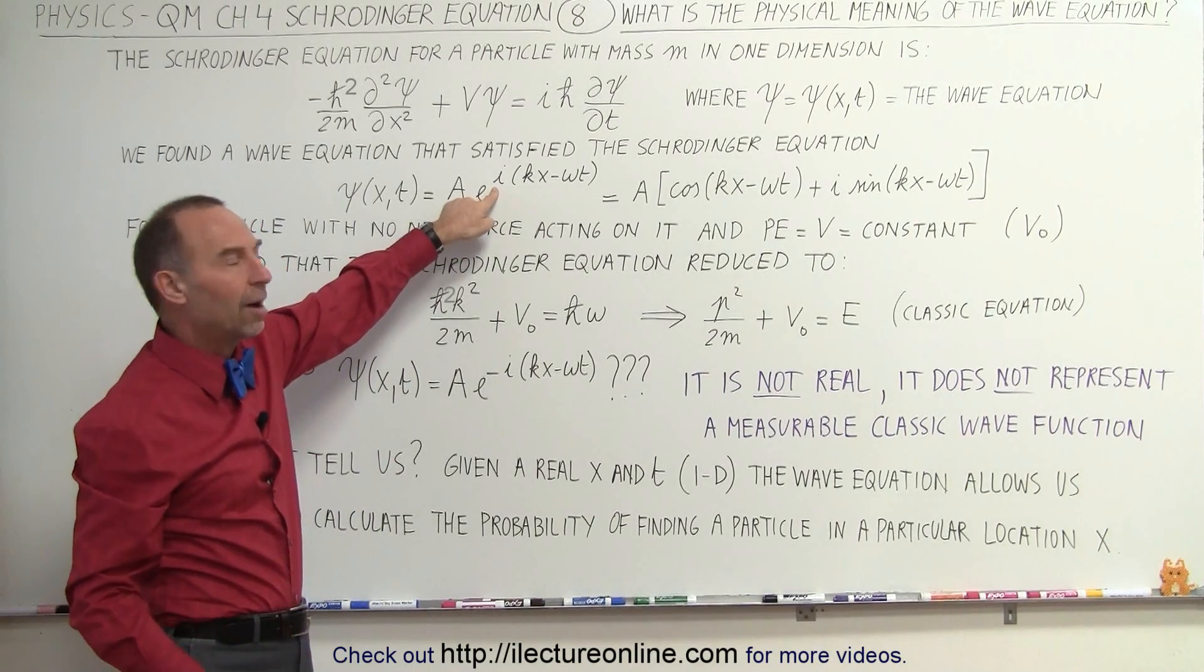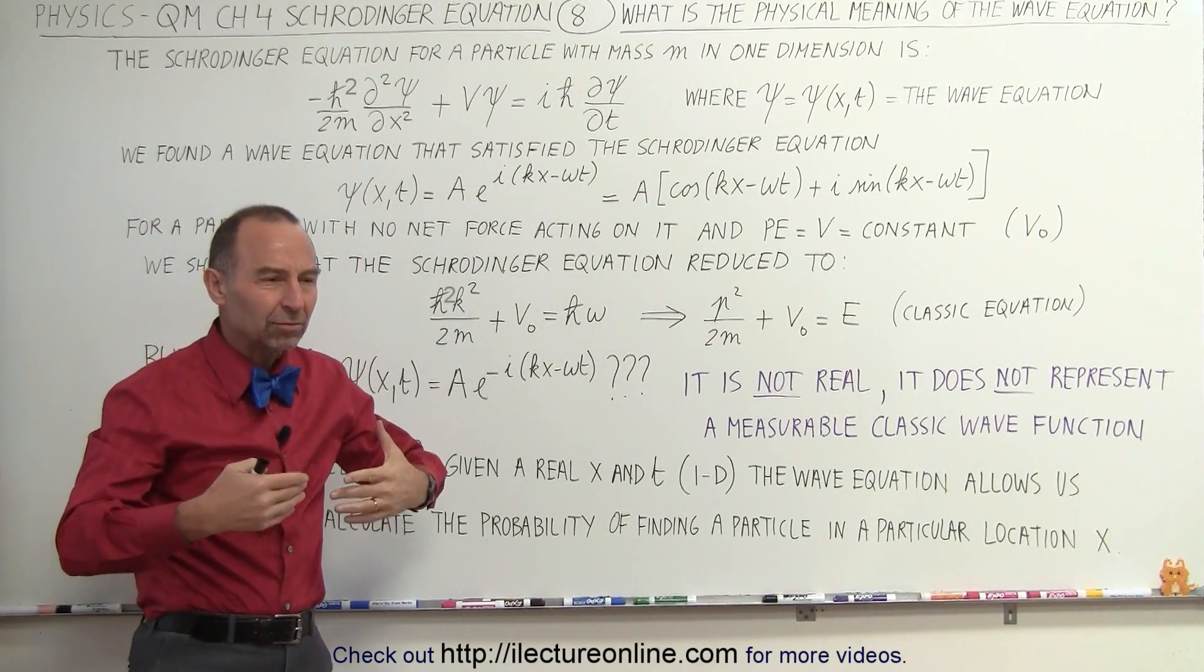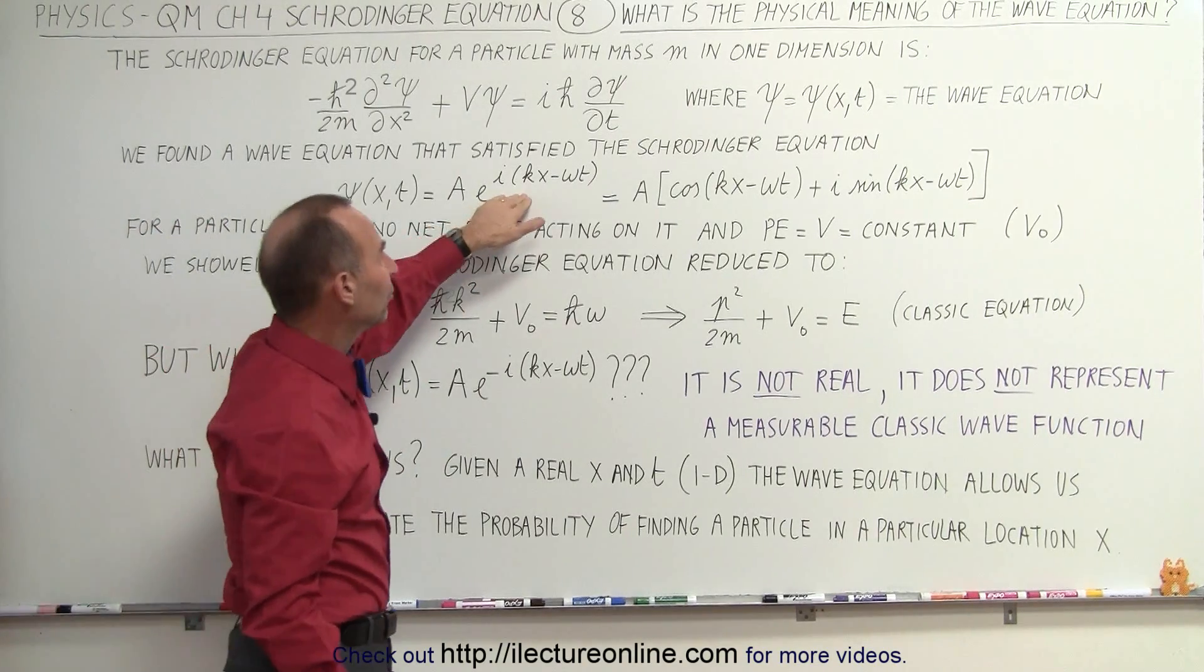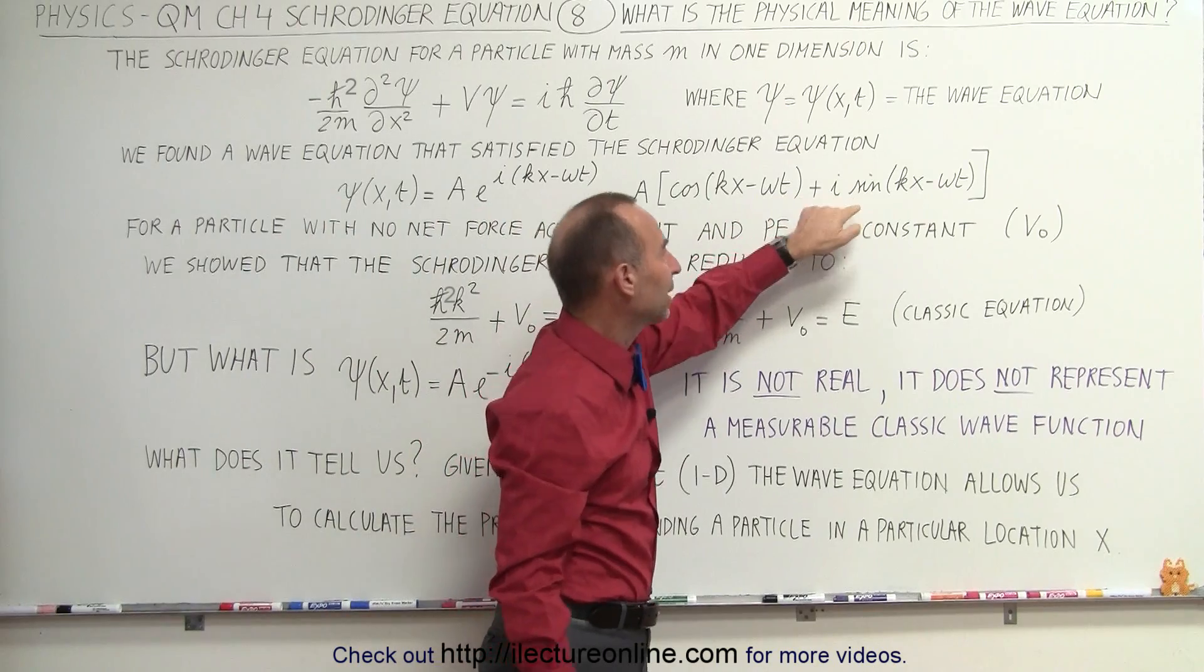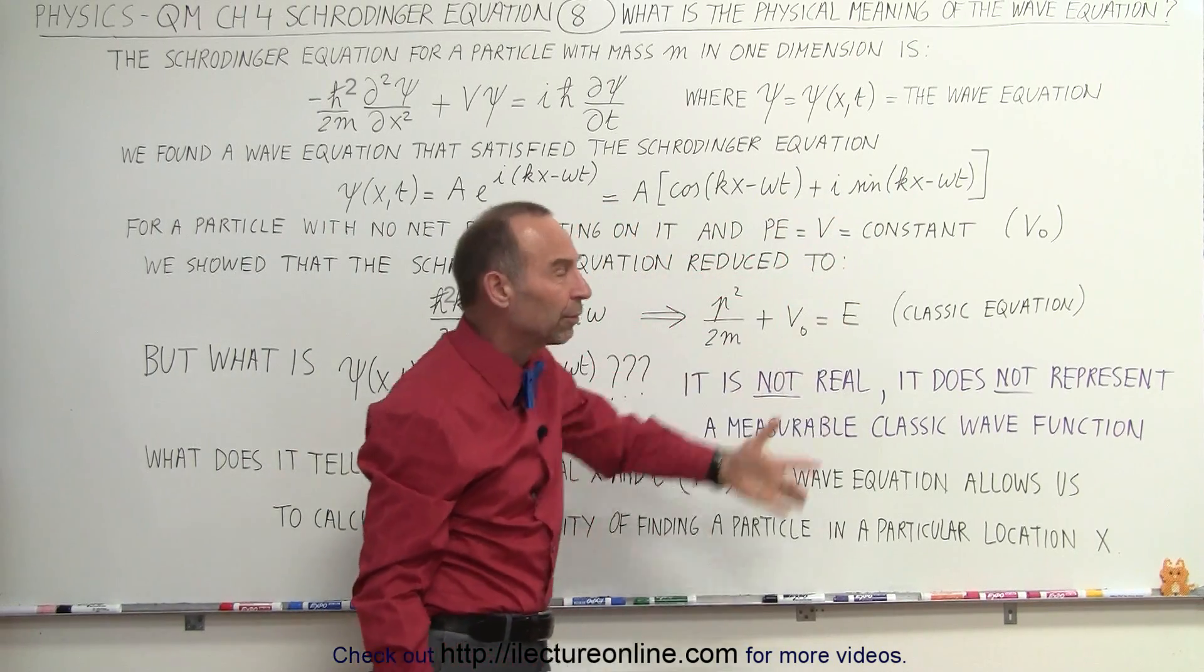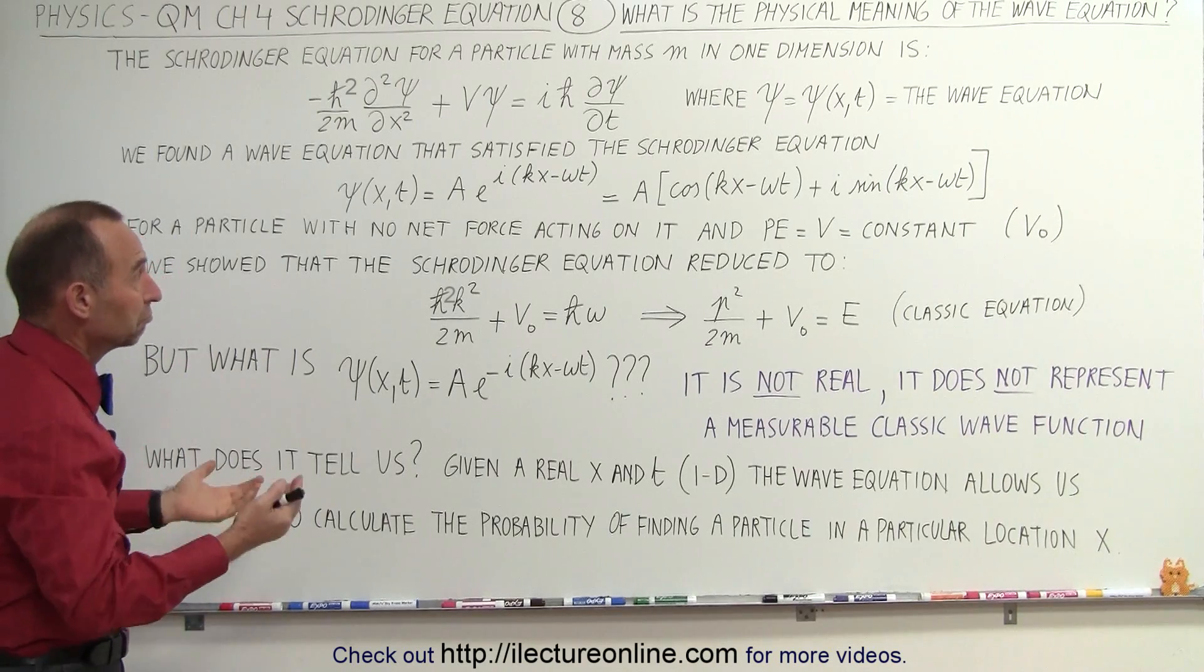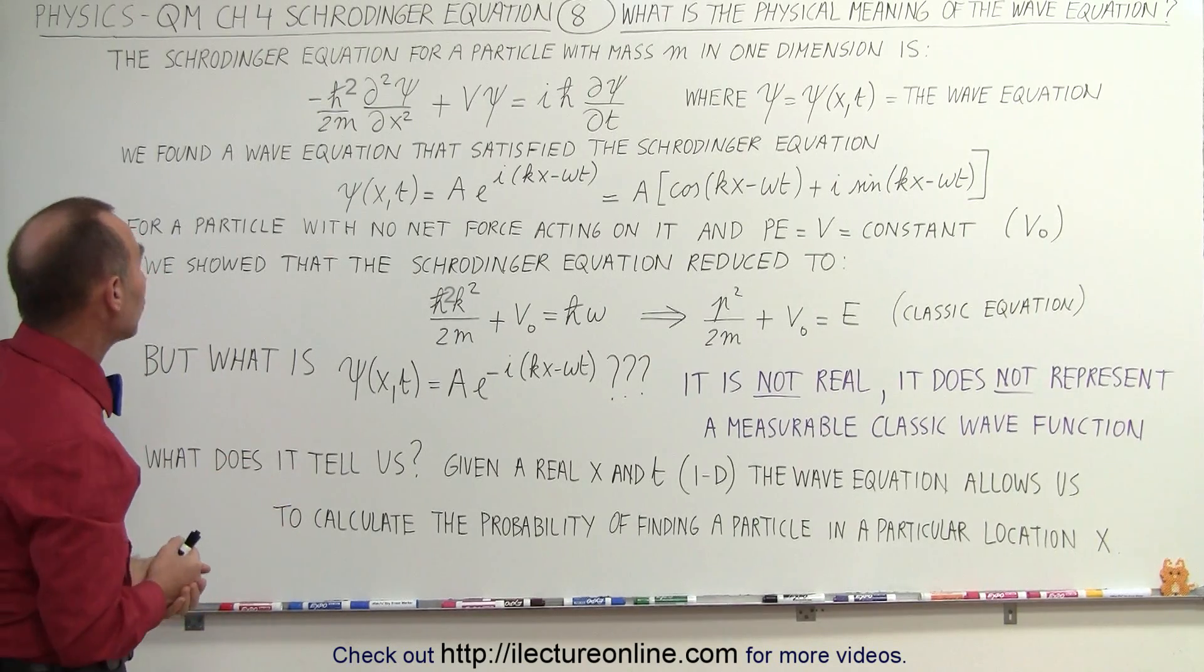But the i kind of throws us off, because i makes it not a real quantity. Of course, we can also write this in the form of the cosine and the sine. But again, we have this i in there, the square root of negative one, which makes it a non-real solution or non-real equation.